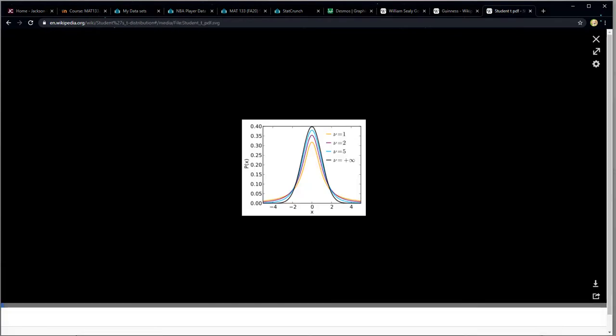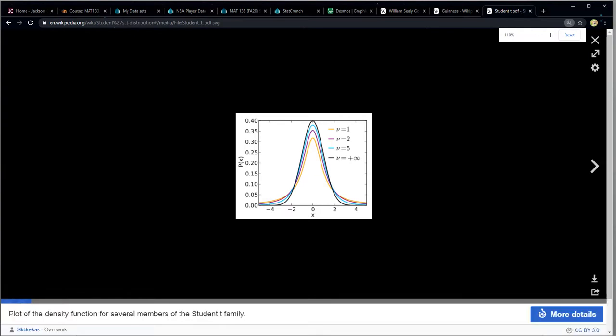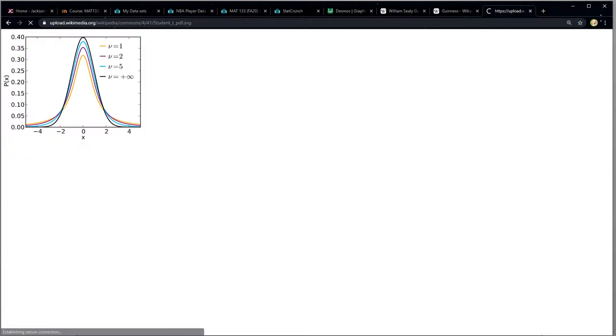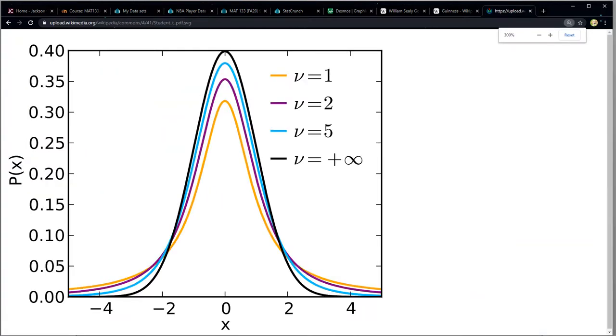Student's t distribution is a new distribution that we will look at right here, and it's actually a lot of curves simultaneously. It's not one curve. There's actually infinitely many curves in there. So you can see there's a yellow curve, a curve for degrees of freedom is one, degrees of freedom is two. There's a whole bunch of different curves and this is the Student's t distribution. These are just three of the curves.